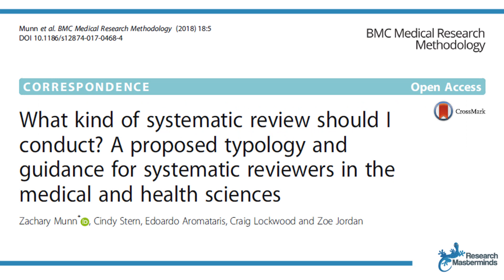A research group led by Zachary Munn wrote a paper titled 'What kind of systematic review should I conduct? A proposed typology and guidance for systematic reviewers in the medical and health sciences.' This is a super valuable article when it comes to figuring out what type of systematic review you need to do according to what you want to achieve. You'll find a link to this valuable paper in the description box below this video.